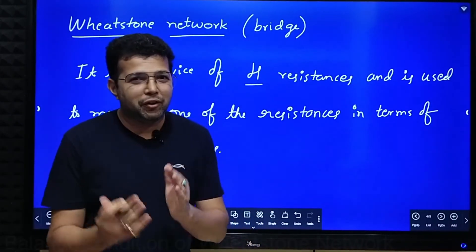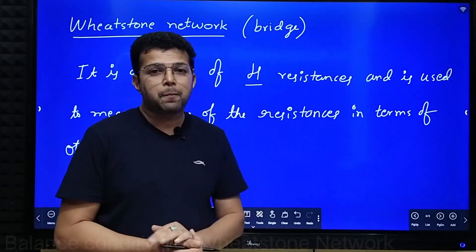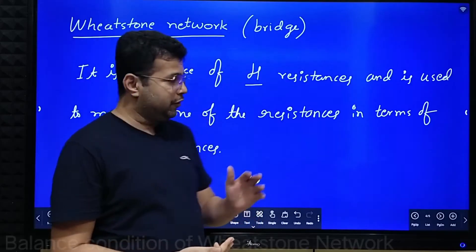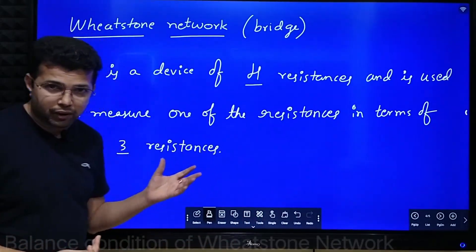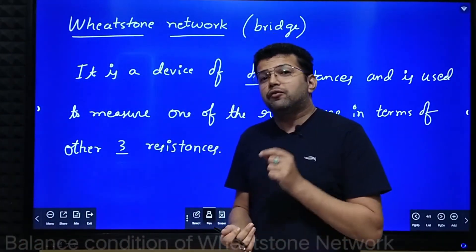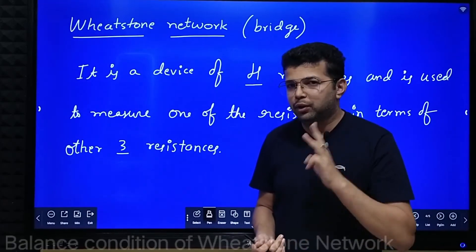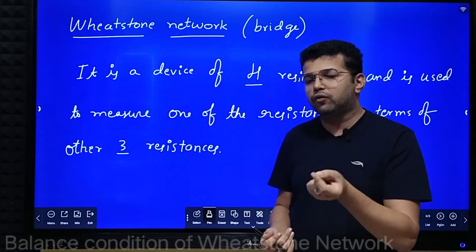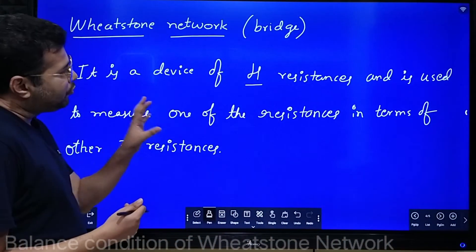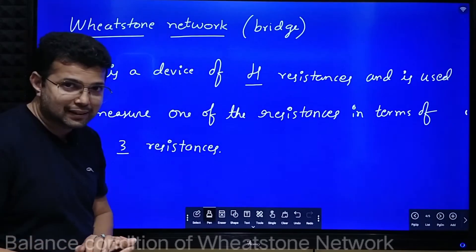Hello everyone. In this session we will try to understand what is a Wheatstone network or a Wheatstone bridge, and we will derive an expression for the balance condition of a Wheatstone network. It is a system of four resistances used to find out an unknown resistance. Out of the four resistances, three should be known and we can find the value of the unknown resistance. It is a device of four resistances used to measure one of the resistances in terms of the other three.